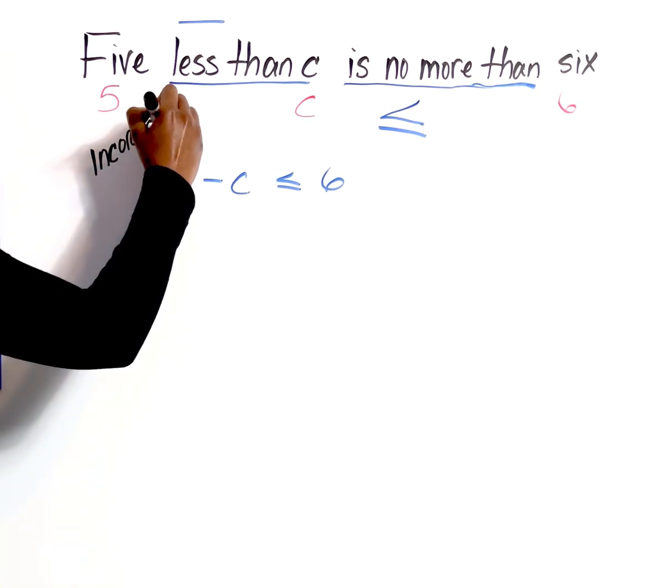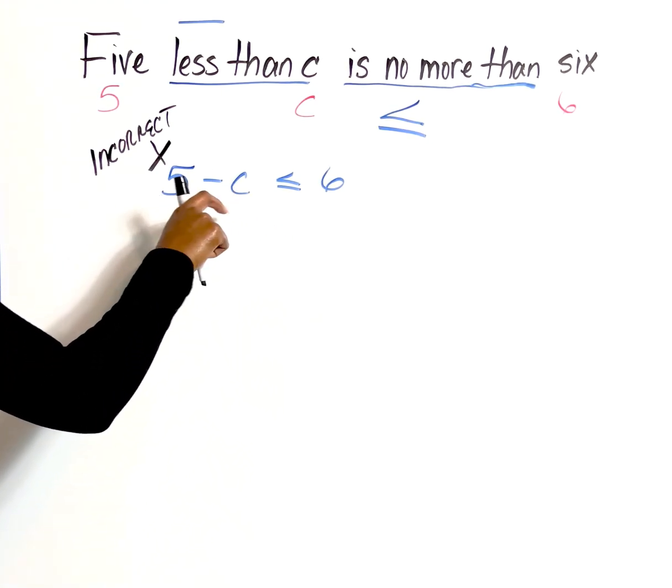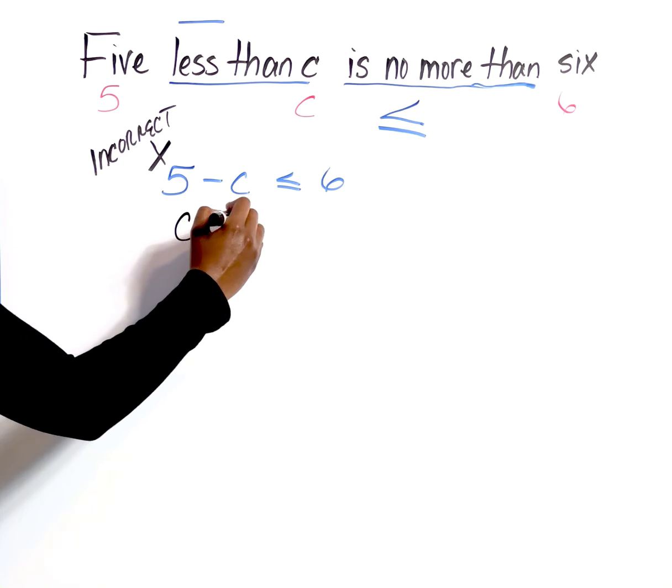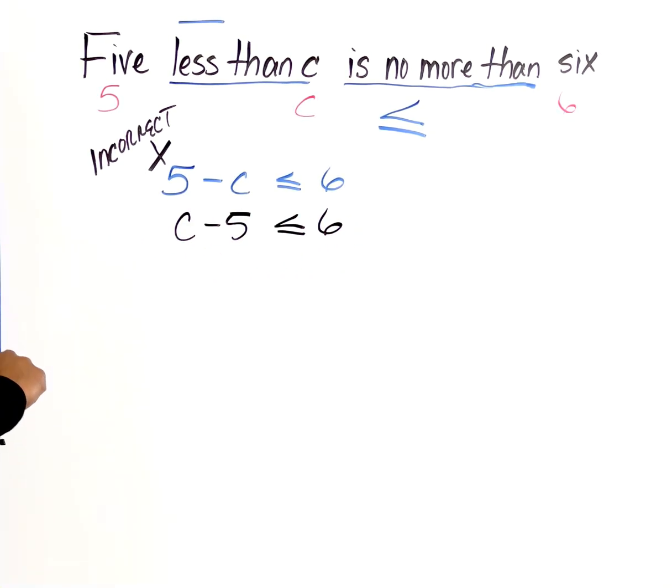Why? Because anytime we are given subtraction, it has to go to the back of our answer. So these need to be flipped around. So it needs to be C minus 5 is less than or equal to 6.